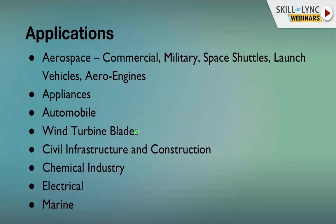Wind turbine blades — transported on large trailer trucks, each blade 20–30 meters long — are made from glass fiber reinforced composite. This makes them very light. If made from metallic material, the weight would be enormous, but composites drastically reduce weight, improving efficiency, transportation, and construction of wind turbine towers.